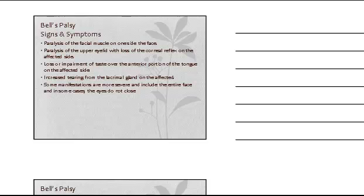We have paralysis of the facial muscle on one side of the face, paralysis of the upper eyelid with loss of the corneal reflex on the affected side. These are symptoms that may or may not occur — these are kind of the worst-case scenarios with Bell's. There can also be loss or impairment of taste over the anterior portion of the tongue on the affected side.